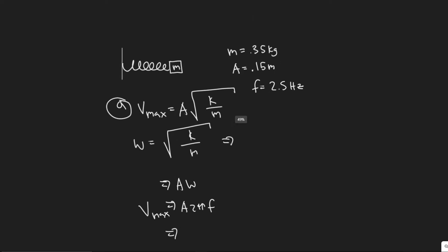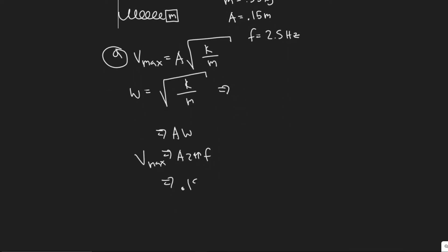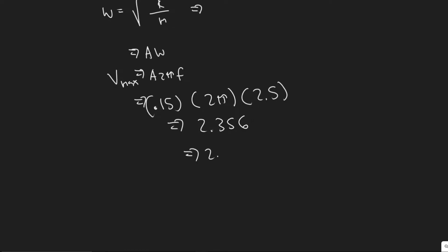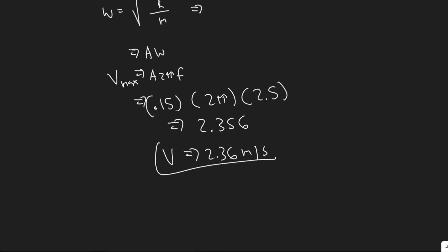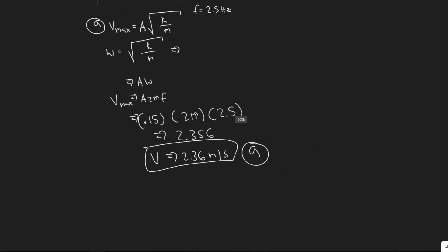We're given both values, so we just plug in: 0.15 multiplied by 2 pi times 2.5. That gives a value of 2.356, which we round to 2.36 meters per second. So the velocity when it passes equilibrium — the max velocity — is 2.36 meters per second.